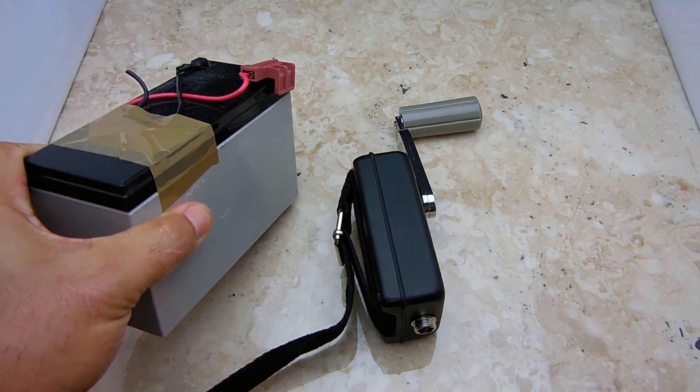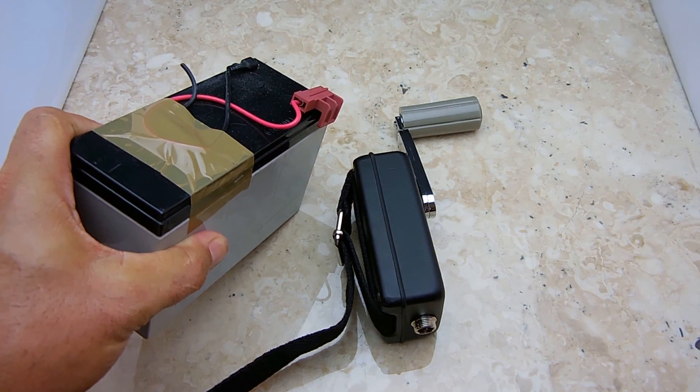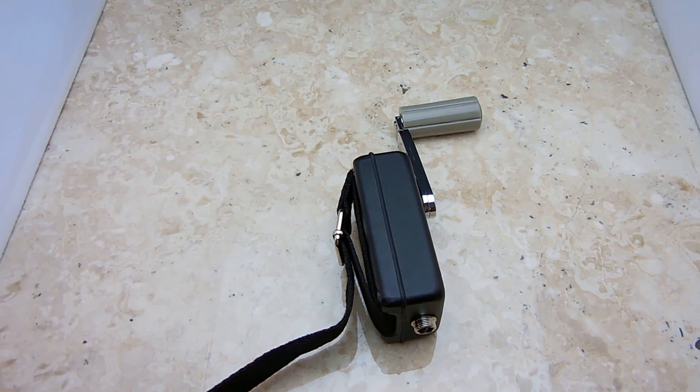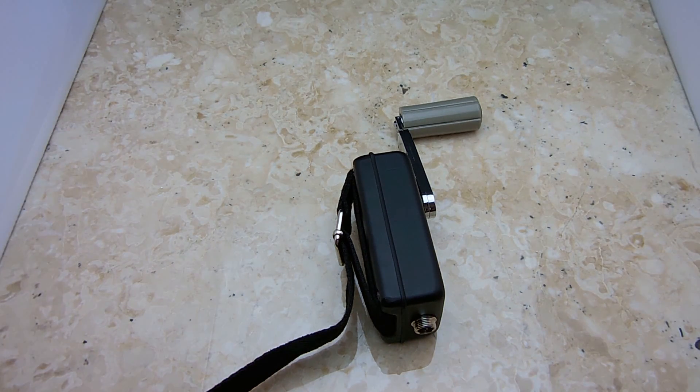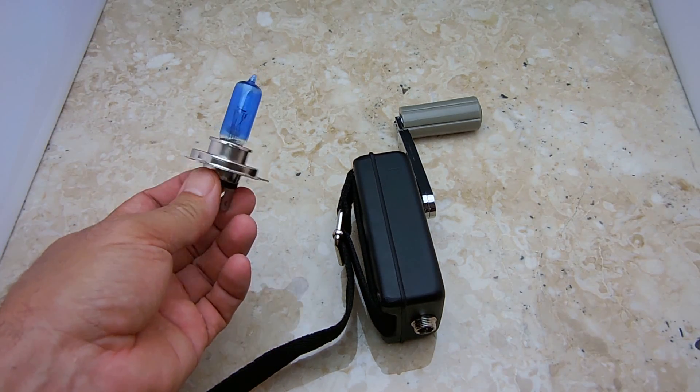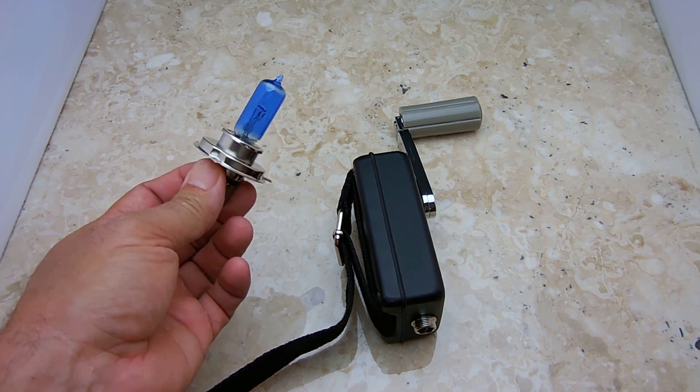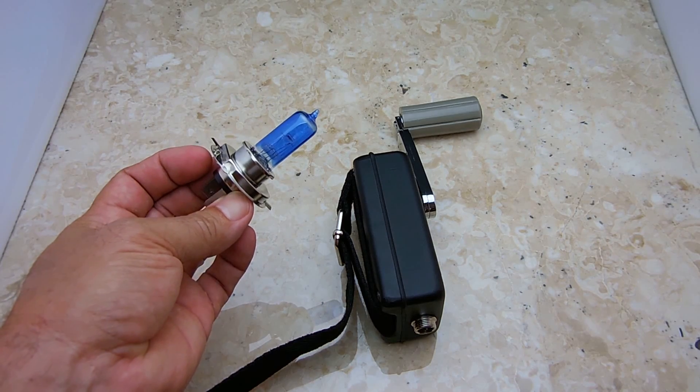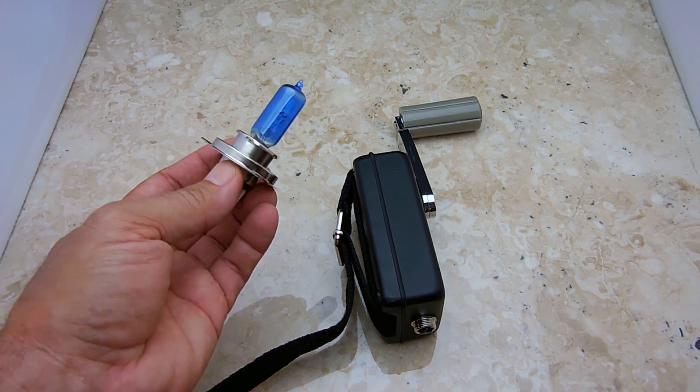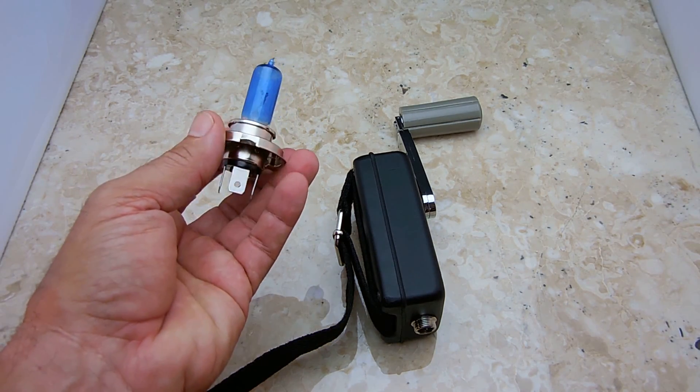I'm also going to connect it up to this sealed lead-acid battery and show you how well it charges this battery up. We're going to be doing some current measurements. I'm also going to be connecting up this high-low beam, I think it's a 45-watt and a 90-watt H4 halogen lamp. We're going to be connecting to the low beam side, which is around in this case I think around three and a half amps.